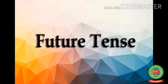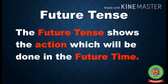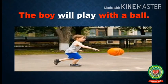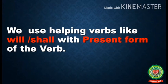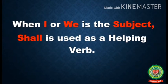Children, now I will discuss the third kind of tense, i.e. the future tense. The future tense shows the action which will be done in the future time. Let us discuss some examples. First example is: the boy will play with a ball. Second example is: my mother will cook food. Children, we always use helping verbs like 'will' or 'shall' with the present form of the verb in the future tense. Remember, when 'I' or 'we' is the subject, 'shall' is used as a helping verb.